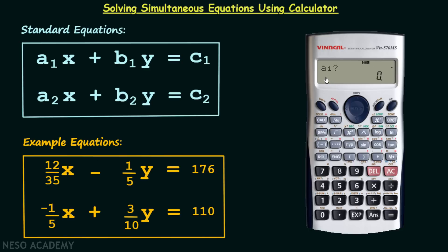Then it is asking what is the value of a₁? a₁ is equal to 12 divided by 35. Then it is asking what is the value of b₁? b₁ is equal to minus 1 divided by 5.